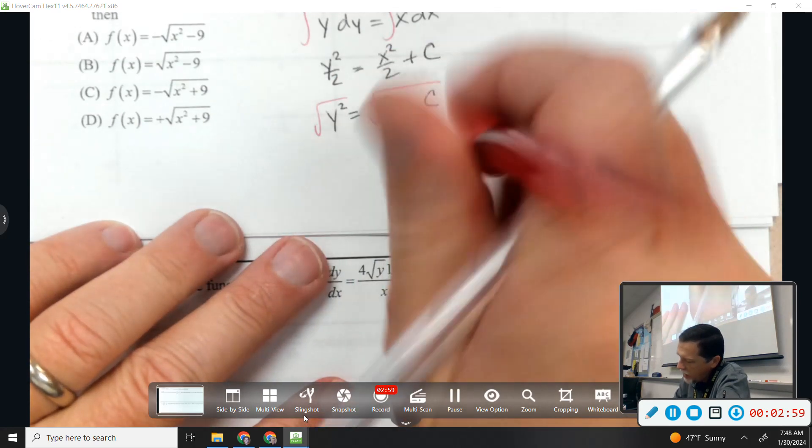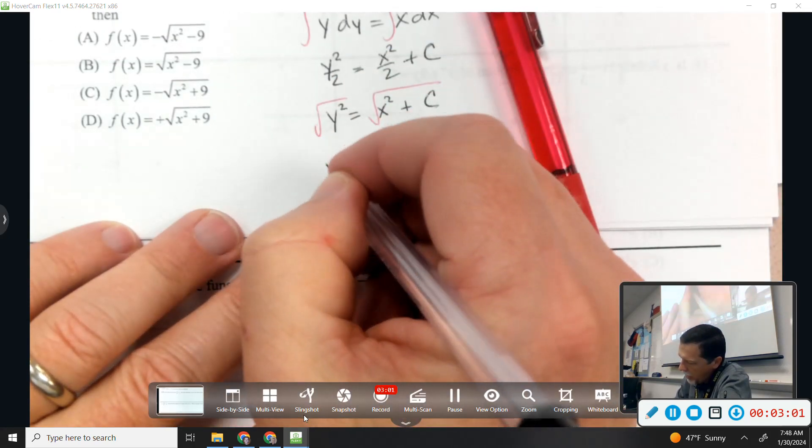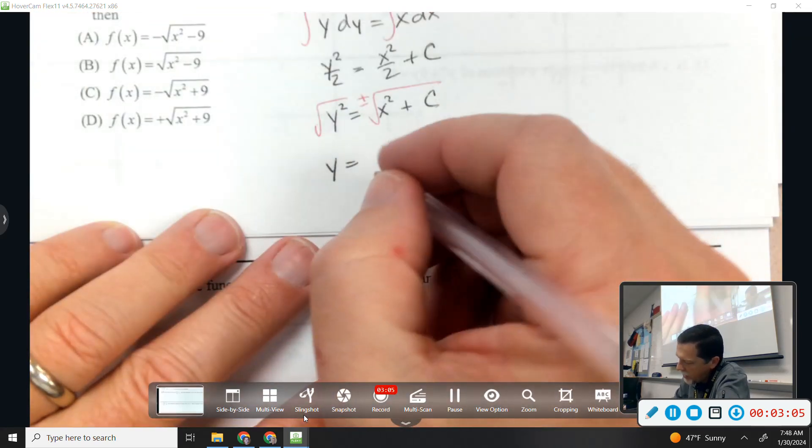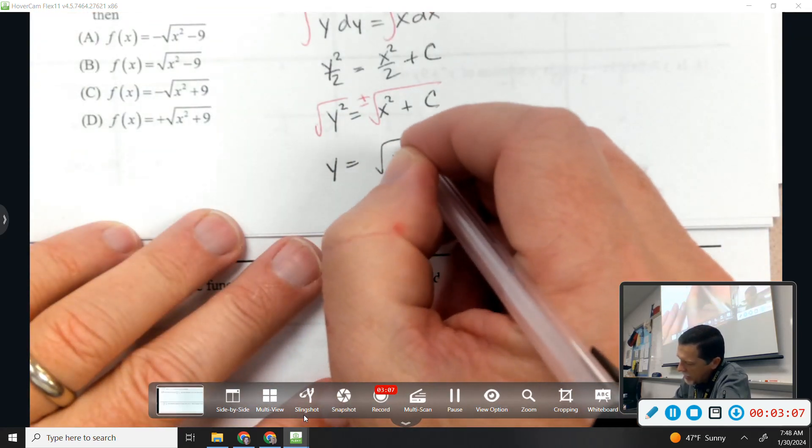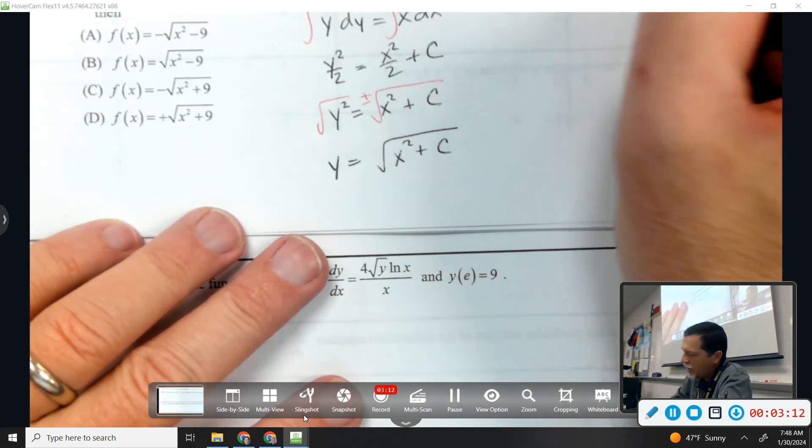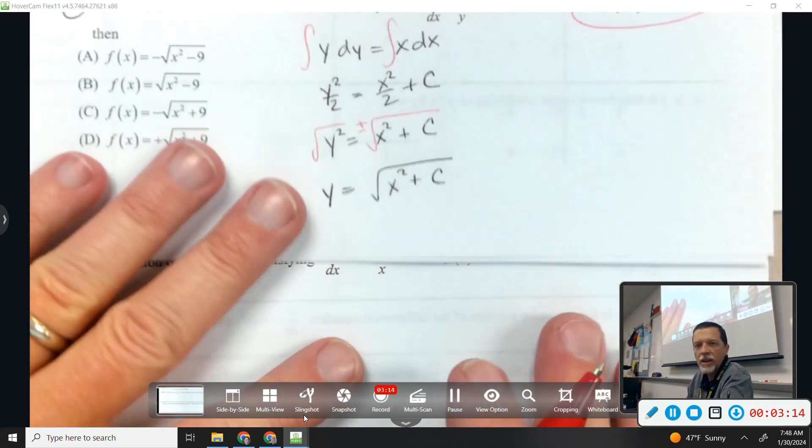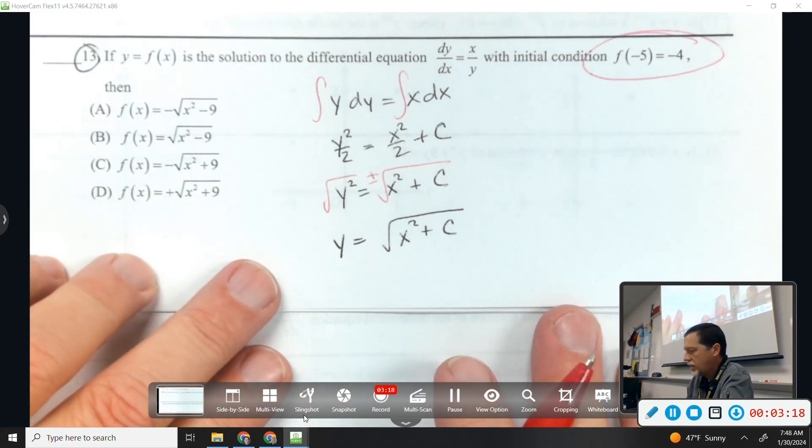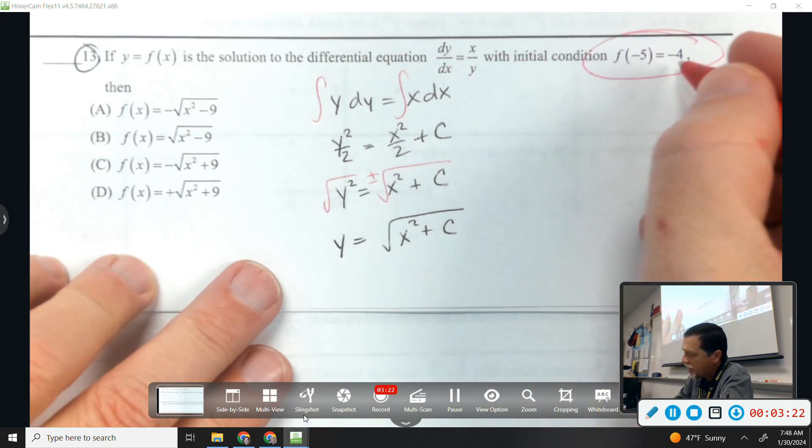Square root both sides. Put the plus or minus on there. You want to pick the plus or minus right now based on my initial condition there. Which one does it have to be? It's got to be the minus to end up with negative 4.